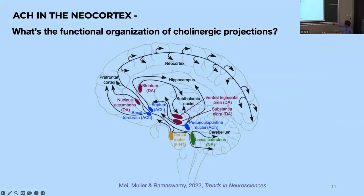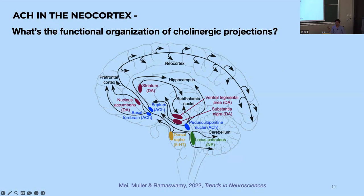There are at least three major cholinergic nuclei in the mammalian brain. The foremost is the basal forebrain, also referred to as the nucleus basalis of Meynert. Axons from the basal forebrain mostly target the neocortex — the prefrontal cortex involved in association or the neocortex involved in processing sensory information. There are also cholinergic nuclei in the medial septum that project to the hippocampal formation, and cholinergic nuclei in the pedunculopontine nucleus, which is quite deep from the cortex and targets brain regions below the thalamus.